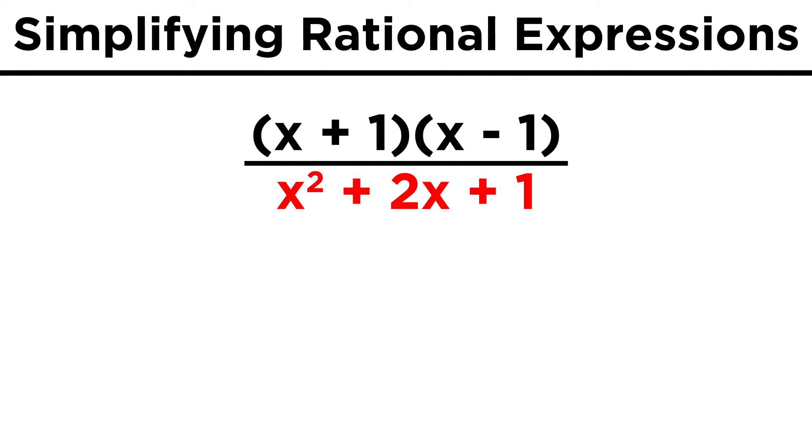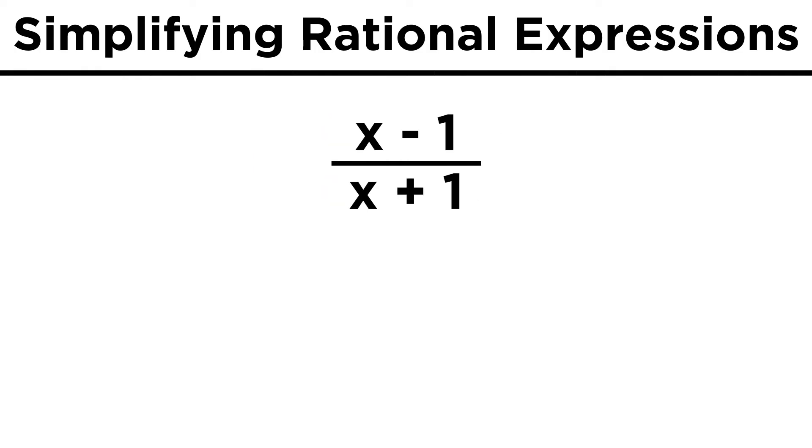Then on the bottom, this can be factored to get x plus one quantity squared, which we can express as x plus one times x plus one. We cancel out an x plus one from the top and bottom, and we are left with x minus one over x plus one, which is as far as we can go.